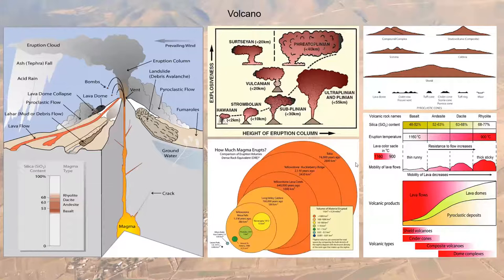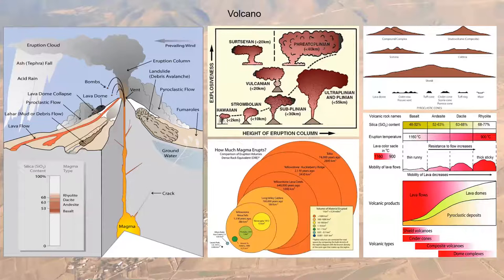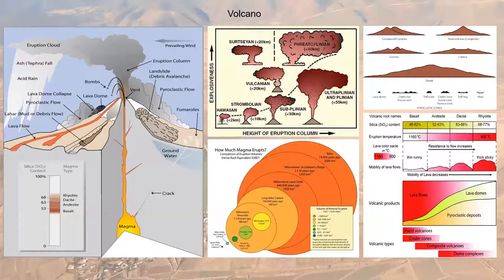Based on magma or lava composition, there are different volcanic morphologies. Shield volcanoes associate with basaltic magmas; then you have cinder or scoria cones, composite volcanoes, and dome complexes when magmas are more silicic or acidic. This is the basic terminology we need before jumping to monogenetic volcanoes. Monogenetic volcanoes are like bonsais of volcanoes — small versions of a volcano.